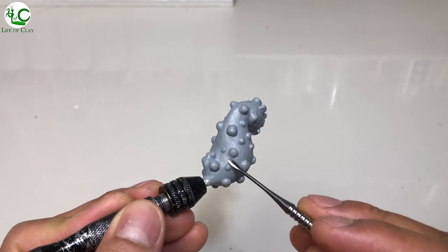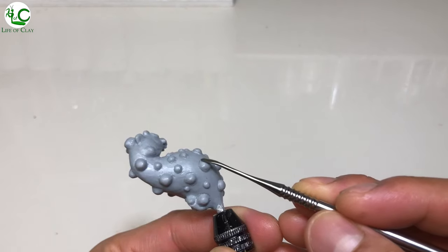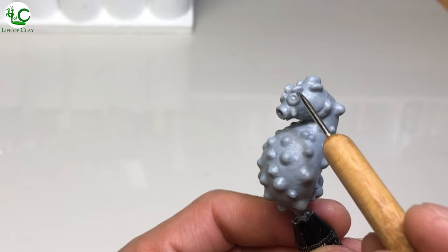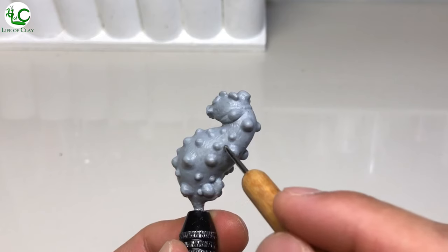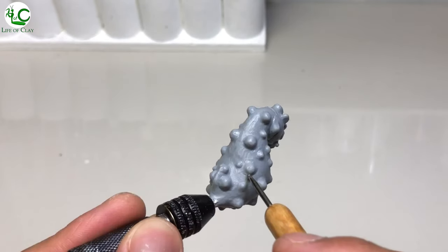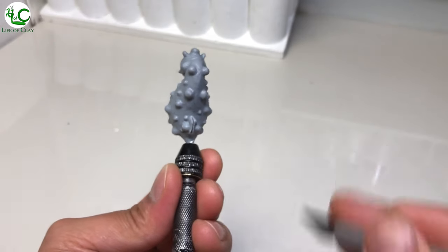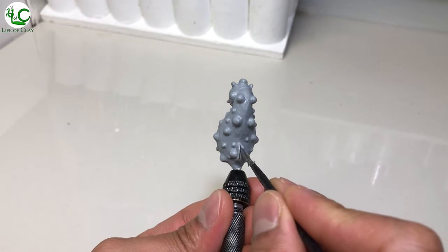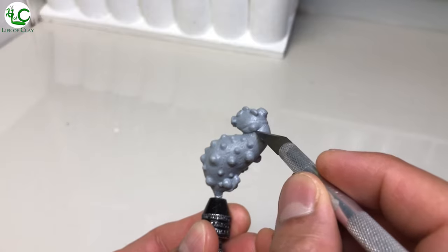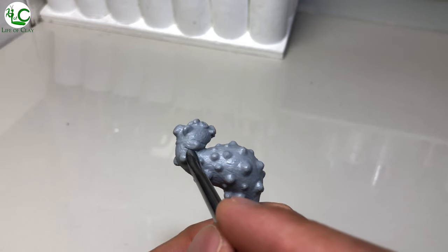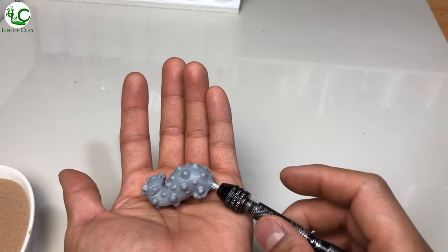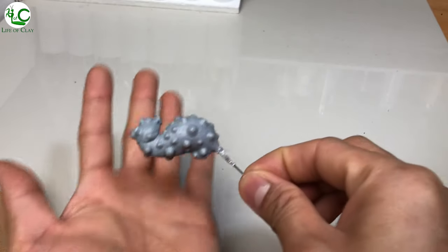I am now refining the tubercles and then adding soft wavy texture on its skin. Then making shallow incision on the base of the dorsal fin and pectoral fin. And after that, let's put it in the oven for the first curing.